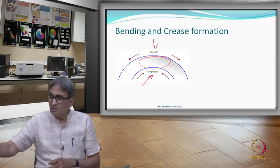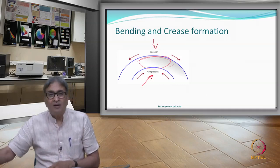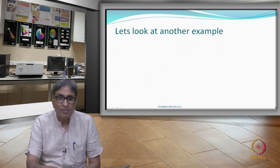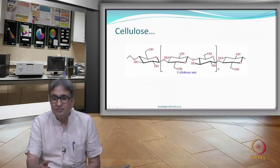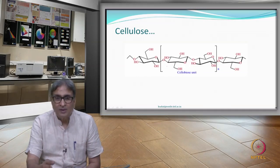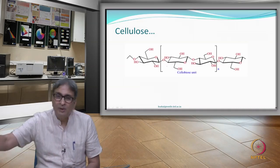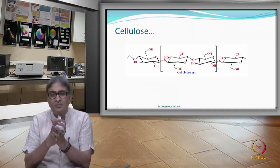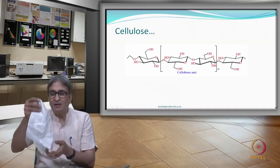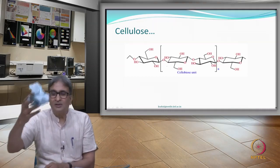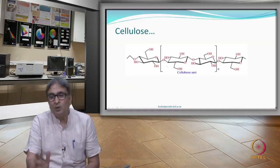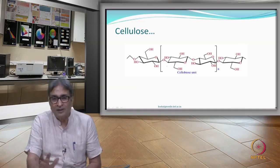Let us look at a molecule like cellulose, which is in cotton and also in paper. Cotton creases and recovery is bad; paper also creases and recovery is bad. Both are made of cellulose — but that is only one part of the explanation.